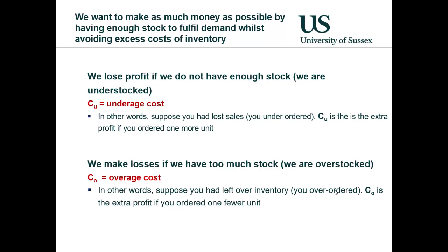In other words, suppose we had lost sales — we had underordered. The underage cost is the extra profit if we had only managed to order one more unit. On the other side, we make losses if we have too much stock — we are overstocked. This is known as the overage cost. In other words, suppose we had leftover inventory, we got too much stock. The overage cost is the extra profit if you had ordered one fewer unit.